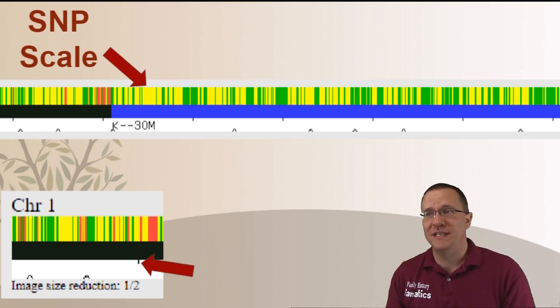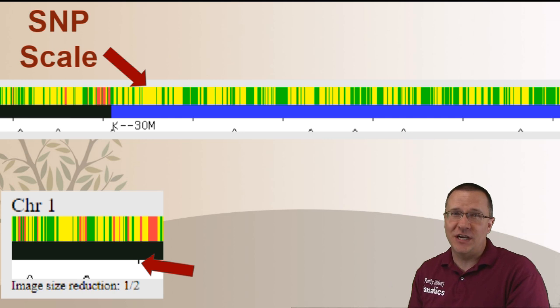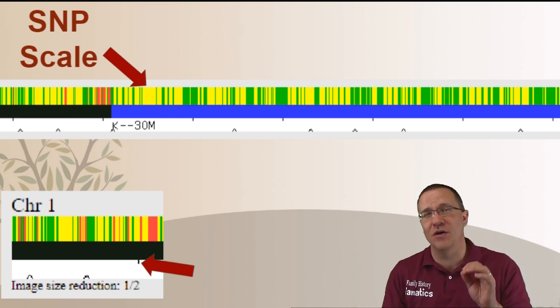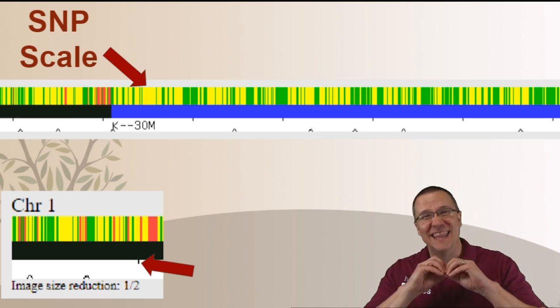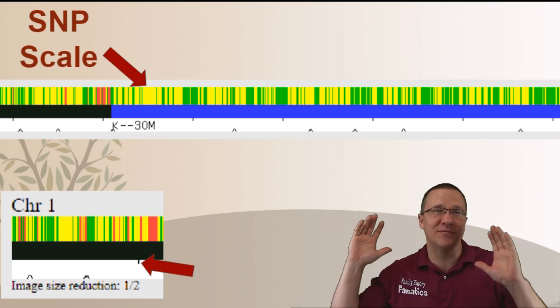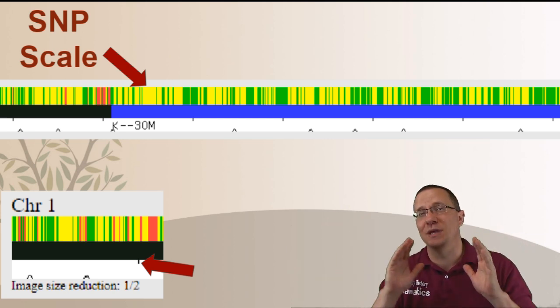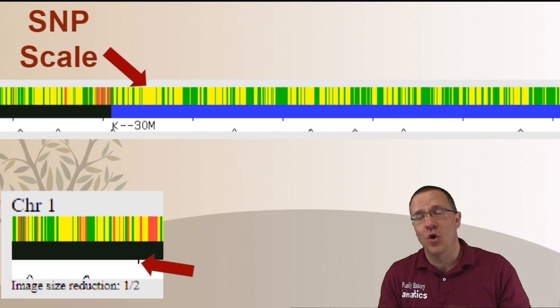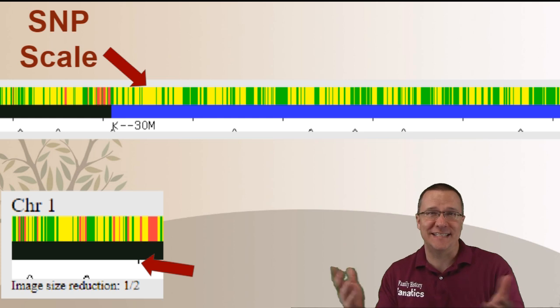However you'll notice that there is an image size reduction one half on some of those chromosomes. And what that means is this was so large that they actually had to go and divide it in half. And so each one of those tick marks represent 200 SNPs. But it's still a SNP scale.